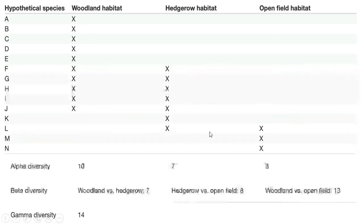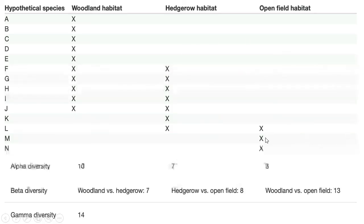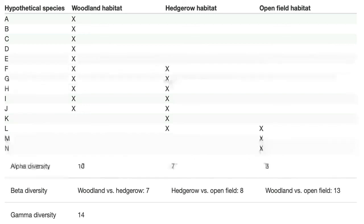Likewise, between hedgerow and open field there are about 8 unique organisms. One species is common so we exclude that and count the rest — one, two, three, four, five, six, seven, and eight. Between hedgerow and open field the beta diversity is 8. Between woodland and open field there are about 3 unique species here and 10 there, giving 13 total.